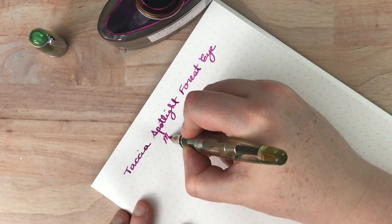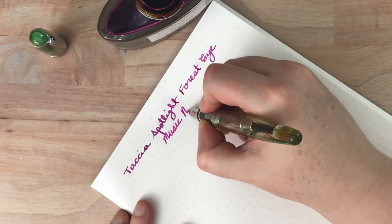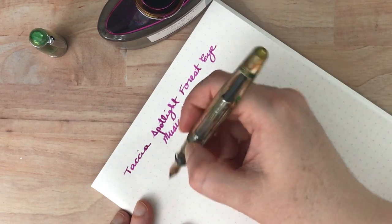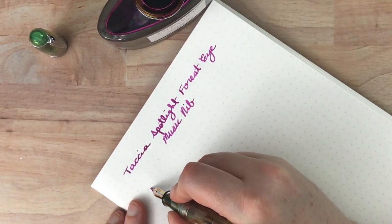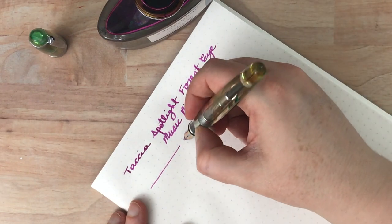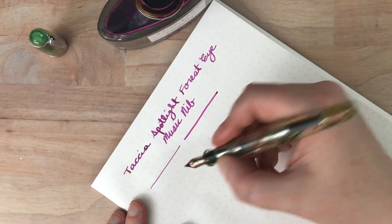And then this is a Music Nib. So that's just writing with this how I would write normally. So what I have noticed is that if you go side to side like that, you're going to get a thinner line. If you do the broad end, you're going to get a bolder line.